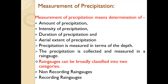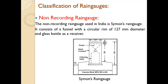Rain gauges can be broadly classified into two categories: non-recording type of rain gauges and recording type of rain gauges. We will discuss the non-recording rain gauge first. The most commonly used rain gauge in India is the Symons rain gauge, which comes under the non-recording rain gauge category.